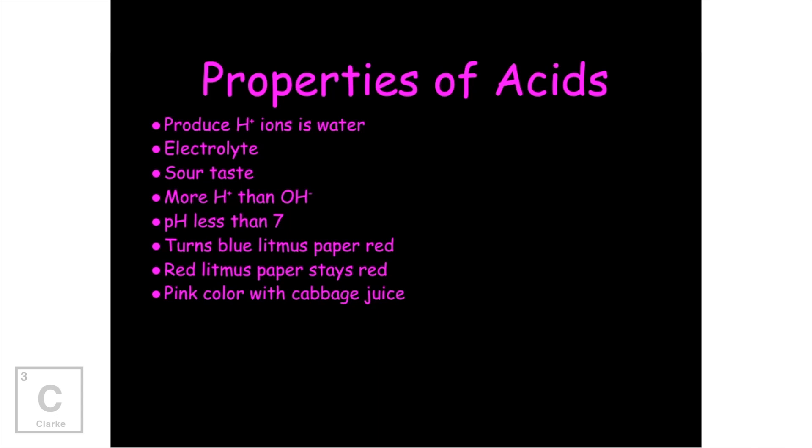Now there is a natural indicator. If you go to the grocery store and you're looking at the purple cabbage, not the green cabbage, the purple cabbage. If you were to take that purple cabbage, cut it up, put it in boiling water, boil, boil, boil, take the cabbage out, you're left with this purple solution. That is a natural pH indicator. And if you were to drop some of that into an acid, it's going to turn pink. So acids turn a pink color when you mix them with cabbage juice.